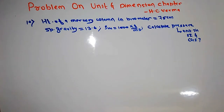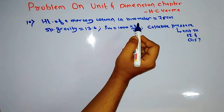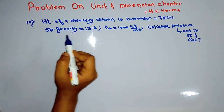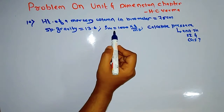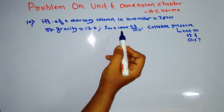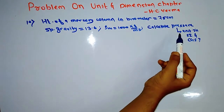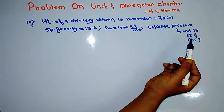Question 10 says that the height of a mercury column in a barometer in a Kolkata laboratory was recorded to be 75 cm. The data given is: specific gravity equals 13.6 and density of water equals 1000 kg per meter cube. We have to calculate pressure in SI and CGS units.